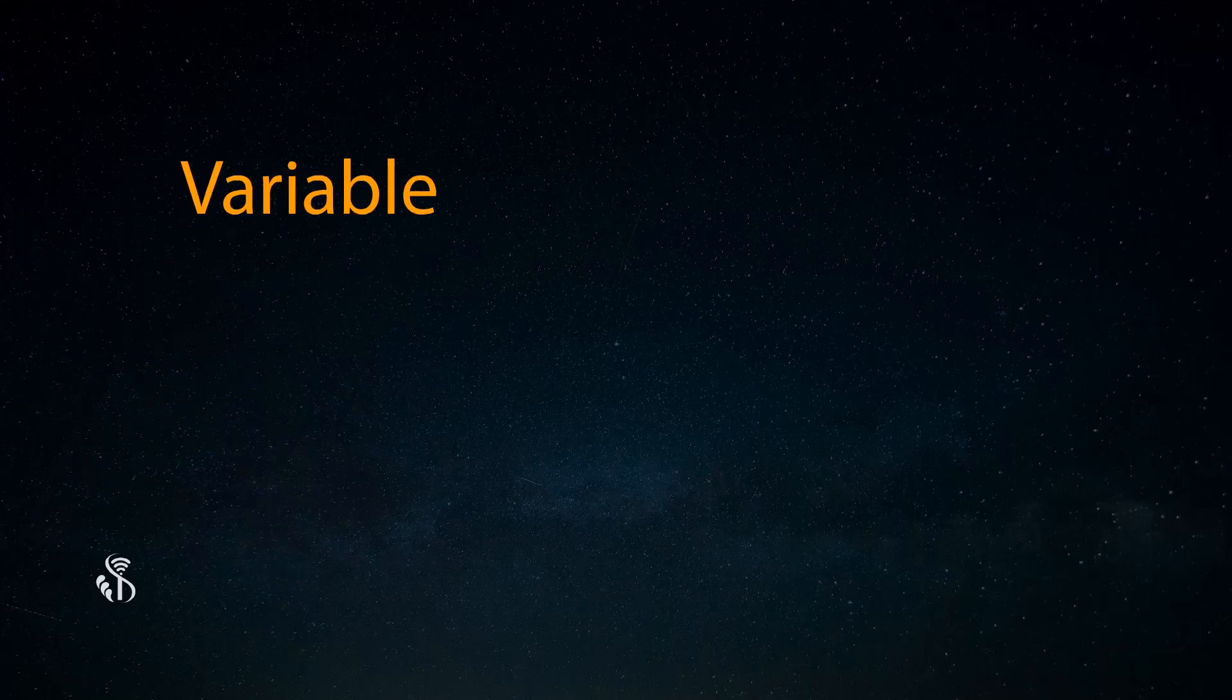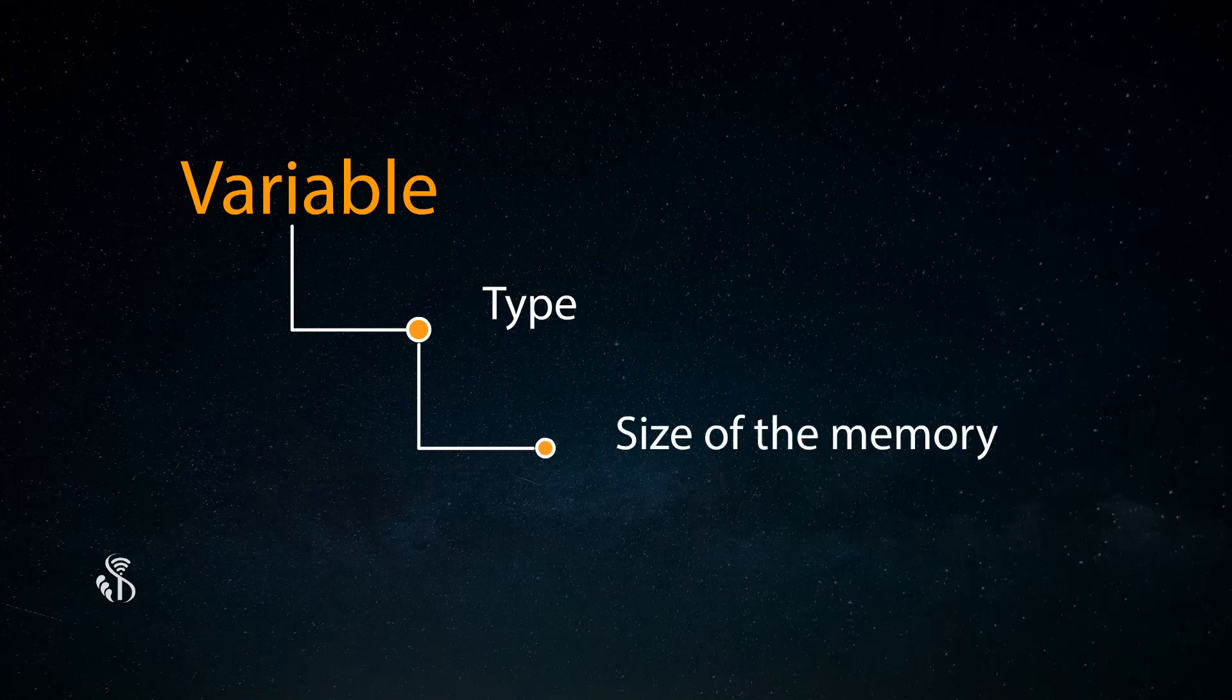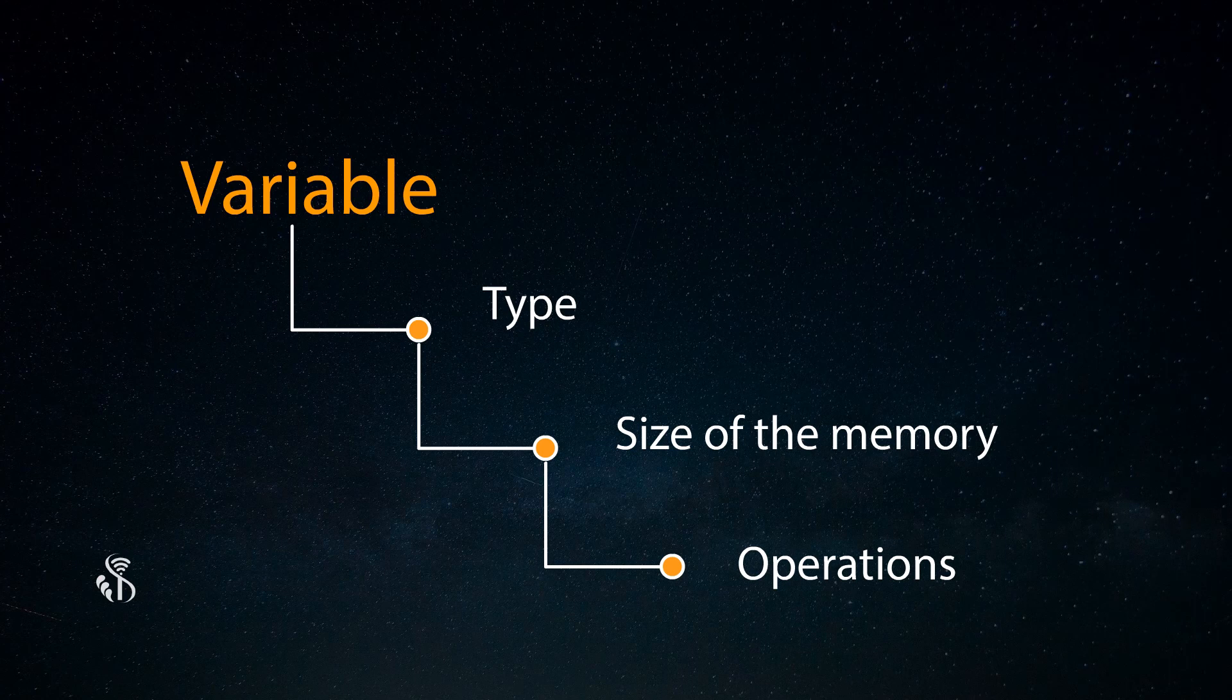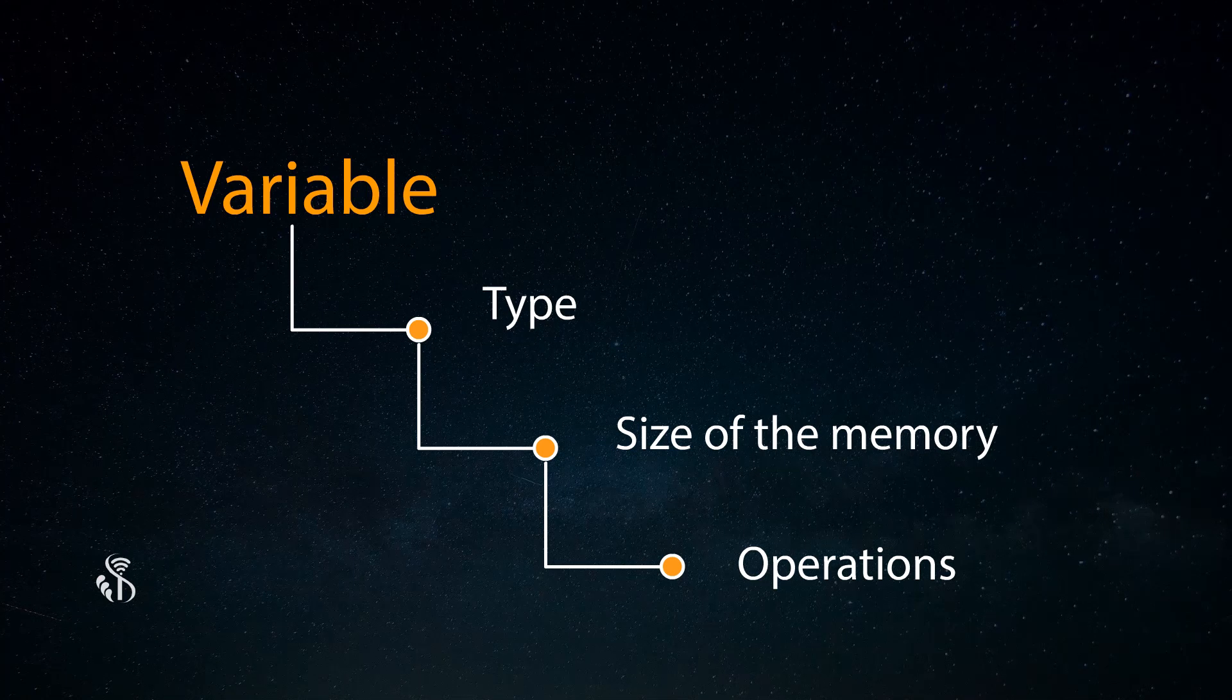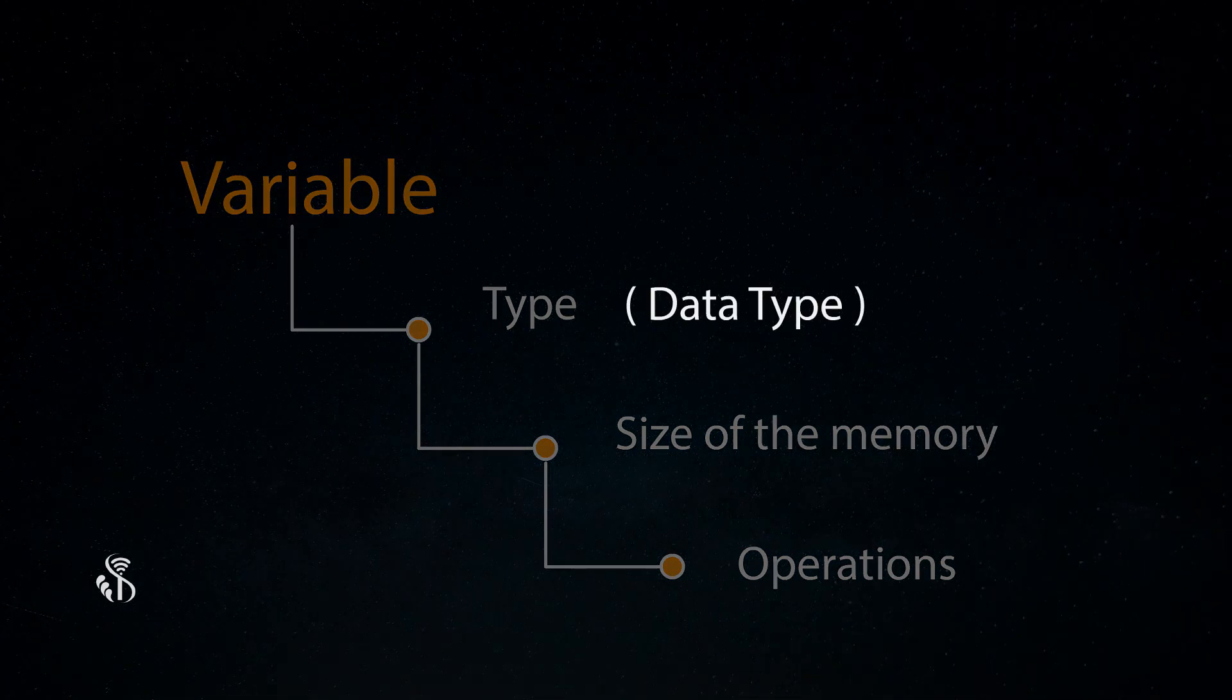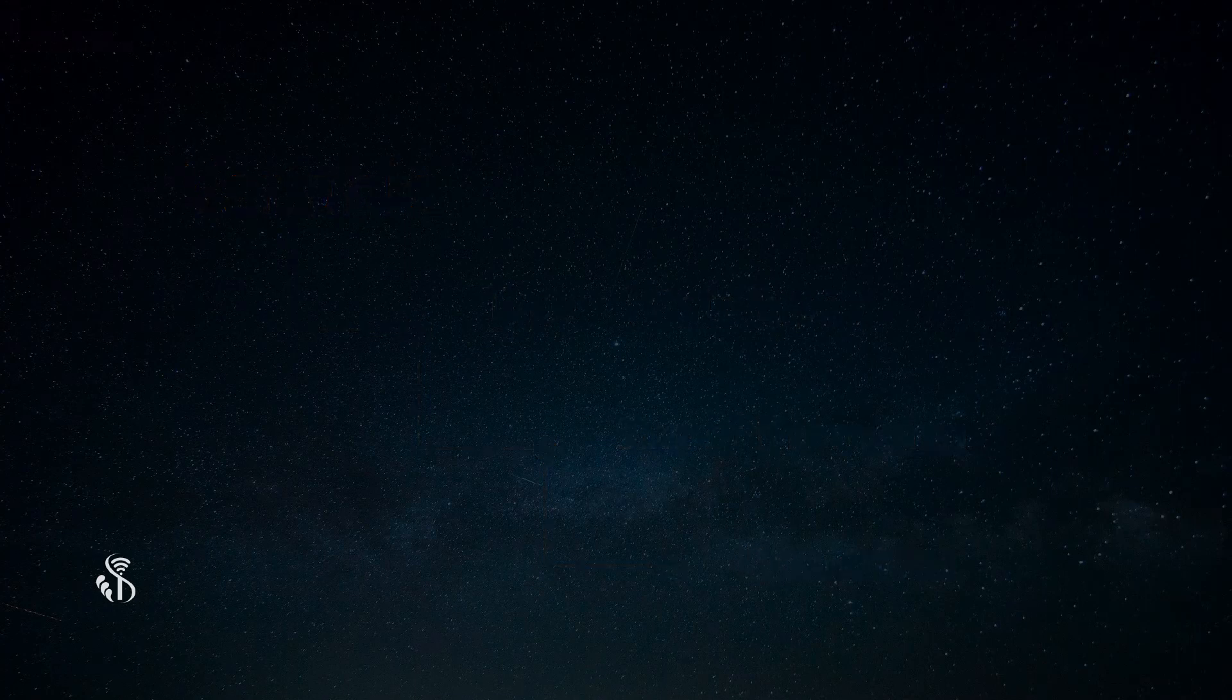Every variable in Java program has its own type, size of the memory, and the operations which can be performed on the variables. While using any variable, it is essential that we declare its data type. You must always declare a variable before it is being used.